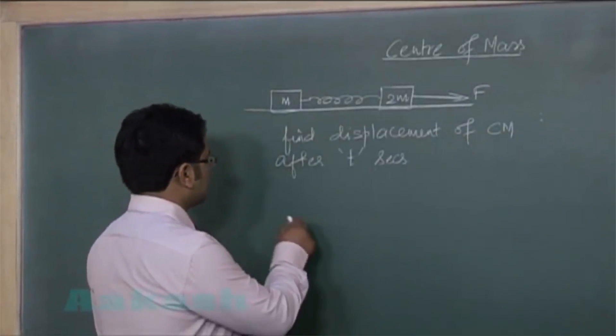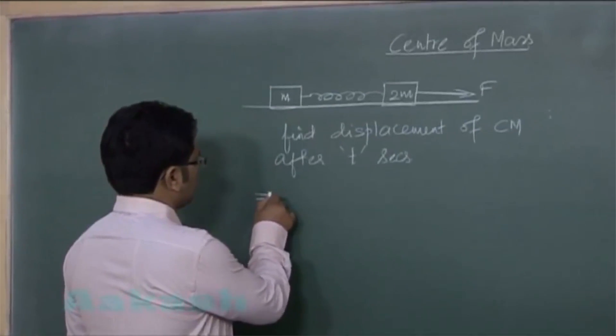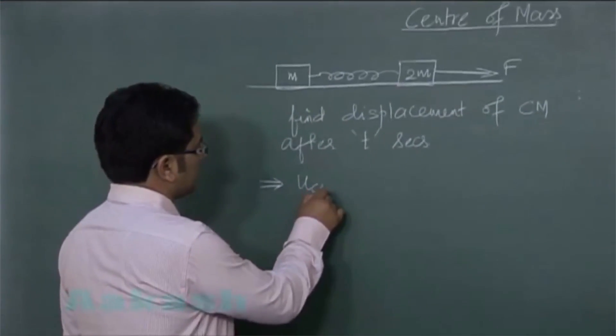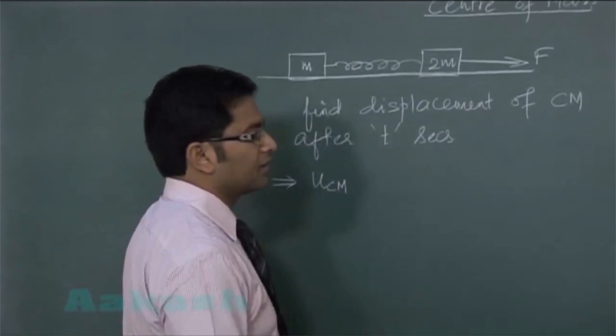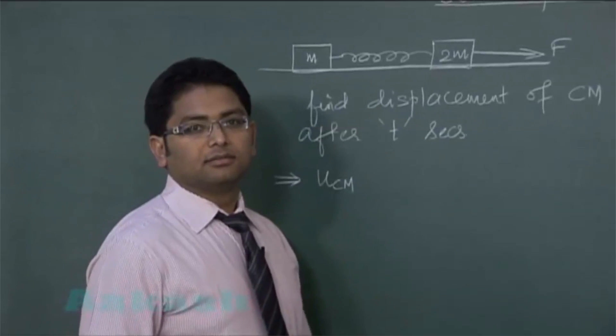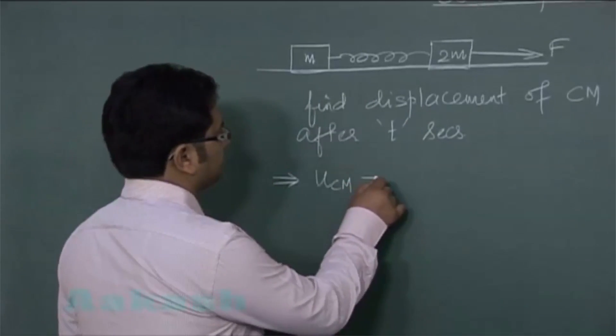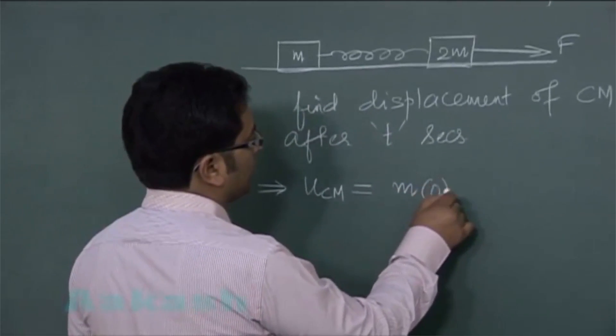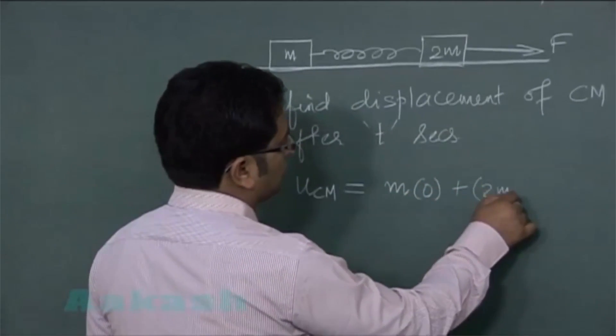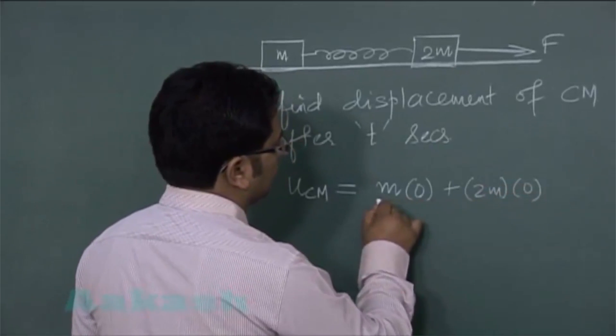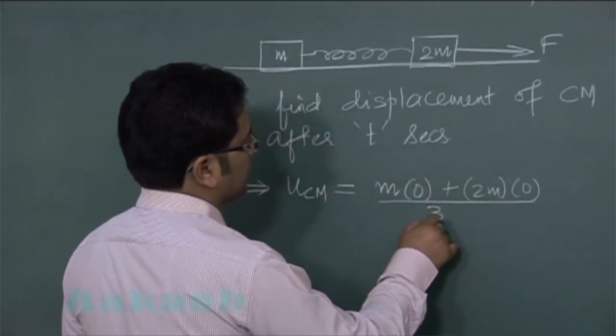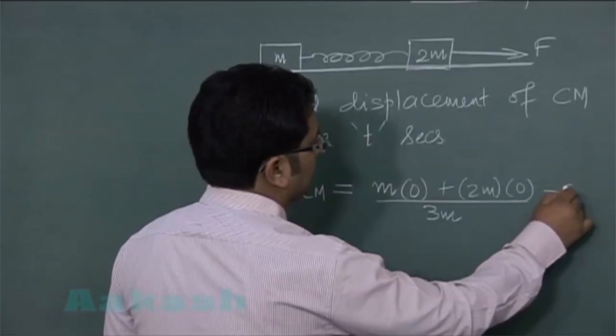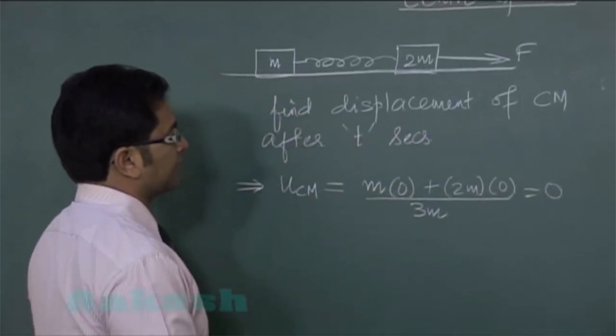So first of all let's calculate the initial velocity of center of mass. That's going to be m1 u1 plus m2 u2 divided by m1 plus m2. And the initial center of mass velocity is 0.